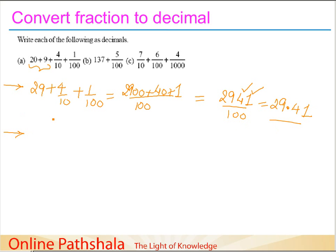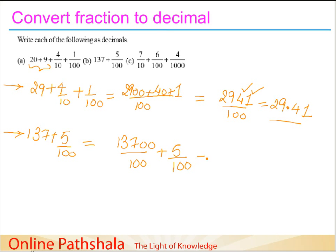Let's take another example: 137 plus five-hundredths. To convert 137 to a denominator of 100, I multiply the numerator by 100, giving 13700. Adding 5 gives 13705 divided by 100. The rule: move one hundredths place, one tenths place, and put the decimal point — giving 137.05.